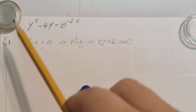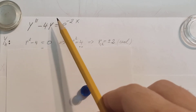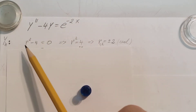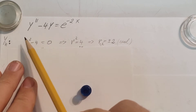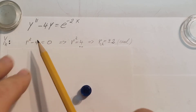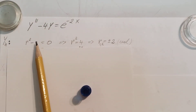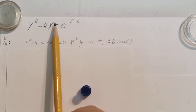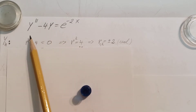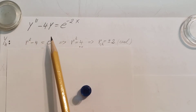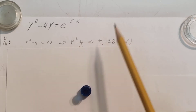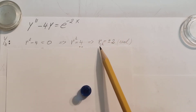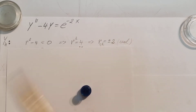So y double prime minus 4y equals 0. We find the characteristic equation for it: r squared minus 4. Make sure you don't accidentally put an r here just because there's a y there. So r squared minus 4 equals 0. That gives me r squared equals 4, and my two roots are two real numbers, plus and minus 2.